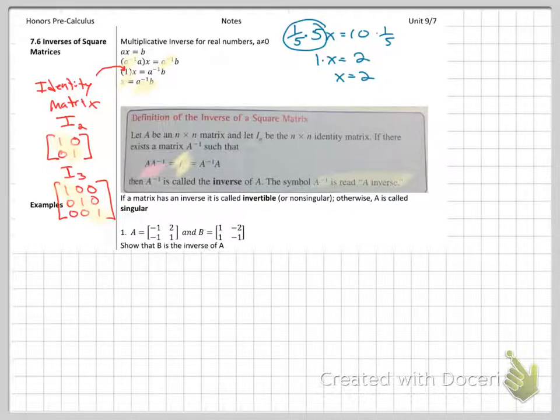Remember proving inverses from integrated 3? You do A times A inverse, and you also do A inverse times A, because order matters when we multiply matrices, so we have to show that you get the same answer, the identity matrix, both ways.